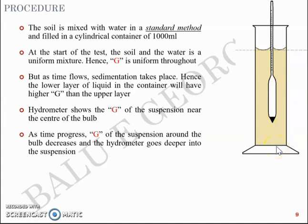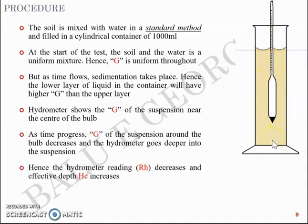As time progresses, specific gravity of the suspension around the bulb decreases because the soil particle settles down and the hydrometer goes deeper and deeper into the suspension. The hydrometer reading RH decreases and the effective depth HE increases.